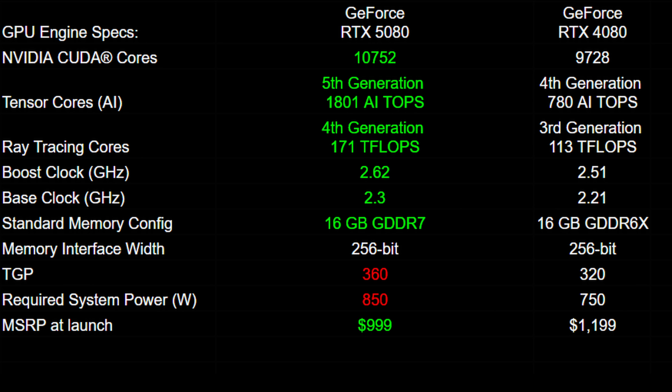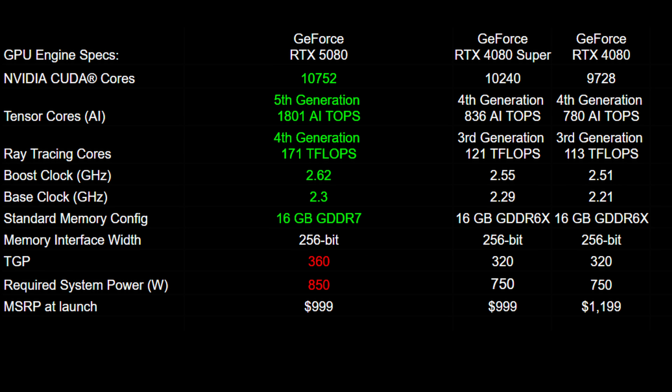The memory configuration is the same amount at 16 gigabytes, however you still get the improvement of GDDR7 over GDDR6X. There's no change to the memory interface bus width, the TGP is slightly worse, and the $1,000 US MSRP compares favorably to the 4080's $1,200 launch price.